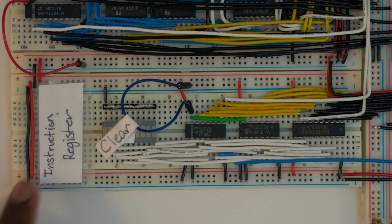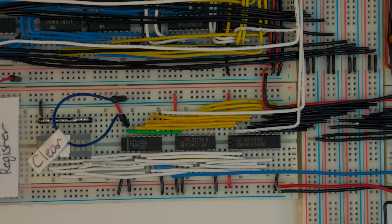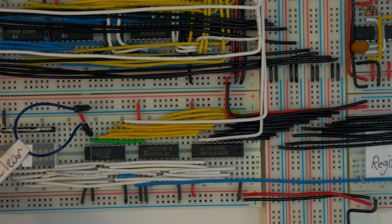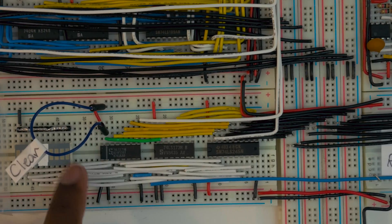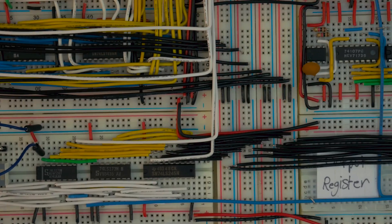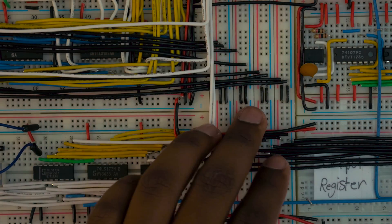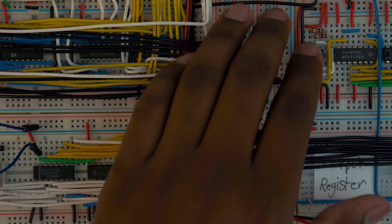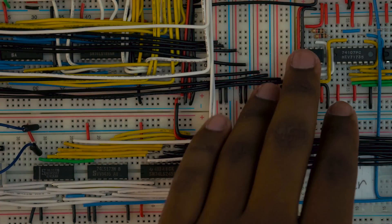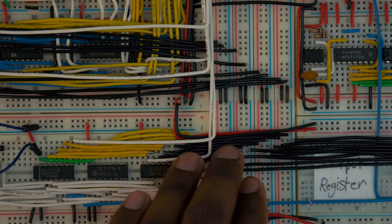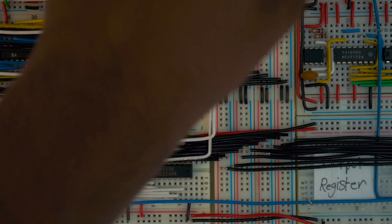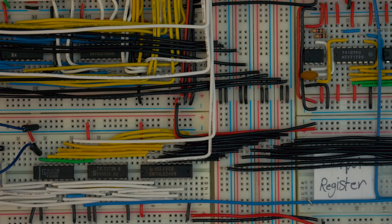And the instruction register, the instruction register over here puts, the first four bits are going to be the instruction, meaning the control word, and the last four bits are going to be the address. So you can see that we have connected the last four bits up to the least four significant bits on this bus line, meaning that everything that has to do with the memory address is on the least significant four bit lines, and everything that has to do with the control word is on the most significant four bit lines for the bus.